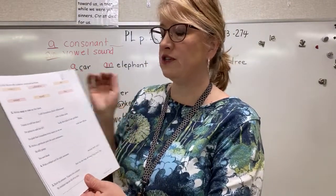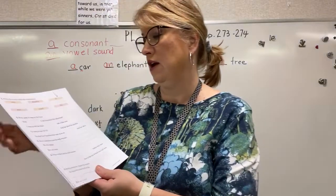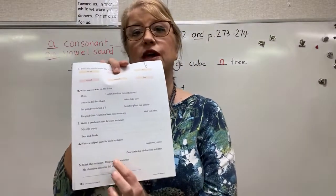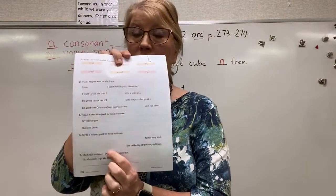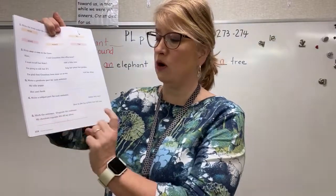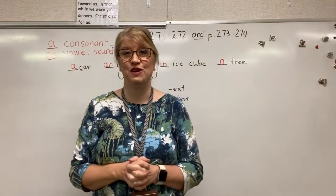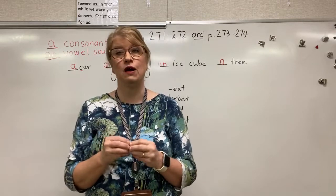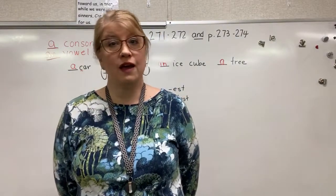Next, write a predicate part for each sentence — just finish the sentence. 'My silly puppy' — what did your silly puppy do? Finish it with an interesting predicate. Then write a subject part for each sentence — you have the ending and need to add the beginning. Remember to capitalize, since all sentences start with capital letters. Finally, read the sentence, mark the subject and the verb, and diagram it. That's all for this lesson — remember you have to do everything because I will be checking it and you need to turn it in by a certain date, so just do your work for that day.